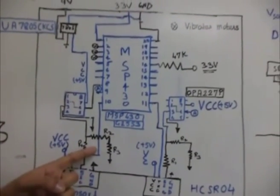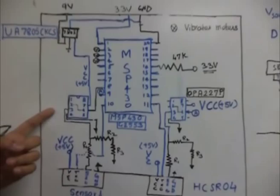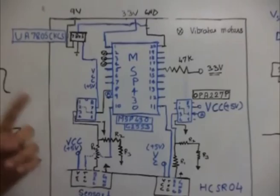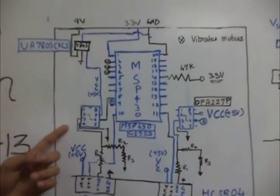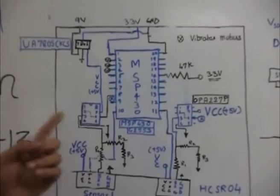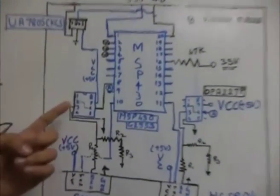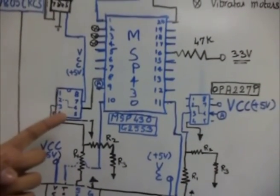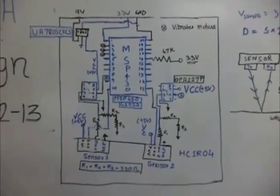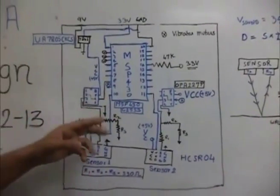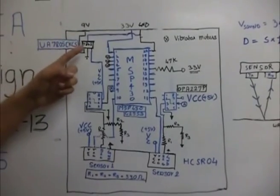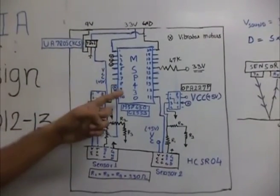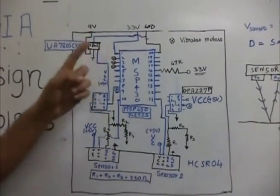To convert the 5V output to 3.3V, we used a combination of a resistor divider circuit and an operational amplifier. The output of the resistor divider is fed to the op-amp, which is configured in non-inverting unity gain feedback to increase stability, lower output impedance, and increase input impedance. The 5V supply is provided by a 9V radio battery via the 7805 regulator, and the 3.3V supply for the MSP430 is provided by two AA batteries in series.